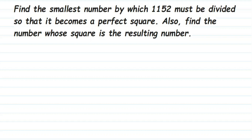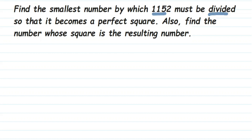Hello everyone. Here is a question from squares and square roots: find the smallest number by which 1152 must be divided so that it becomes a perfect square. Also find the number whose square is the resulting number. So they are asking two things: one is we have to find out the smallest number to be divided so that 1152 will become a perfect square, and then after dividing we have to find out the square root.